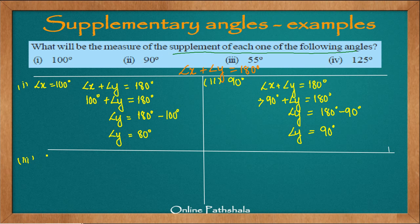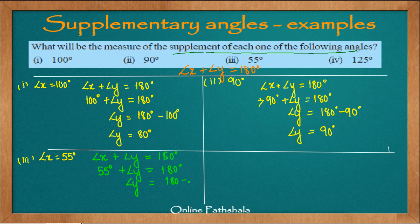For the third problem, angle X equals 55 degrees. Applying the same criteria — angle X plus angle Y equals 180 degrees — and substituting 55 degrees for angle X, we get 55 plus angle Y equals 180 degrees. Transposing 55 degrees to the other side, angle Y equals 180 minus 55. Carrying out the subtraction gives us 125 degrees. So 125 degrees is the supplement of 55 degrees.